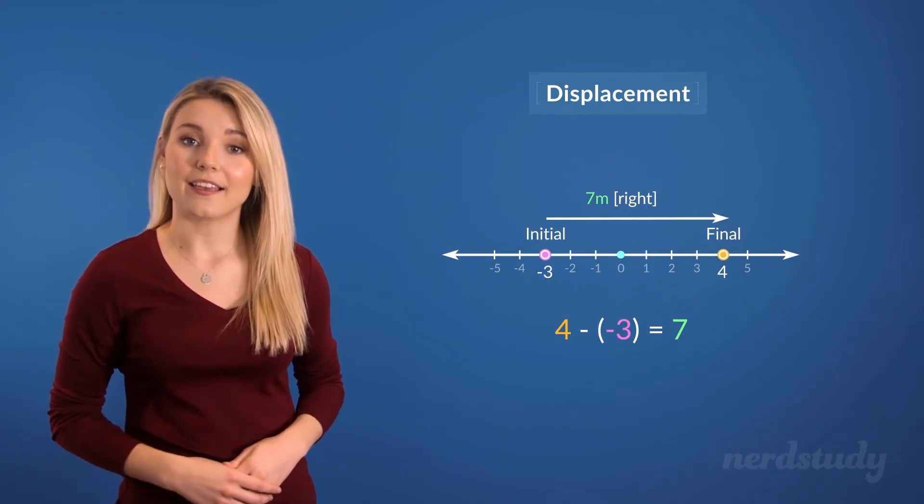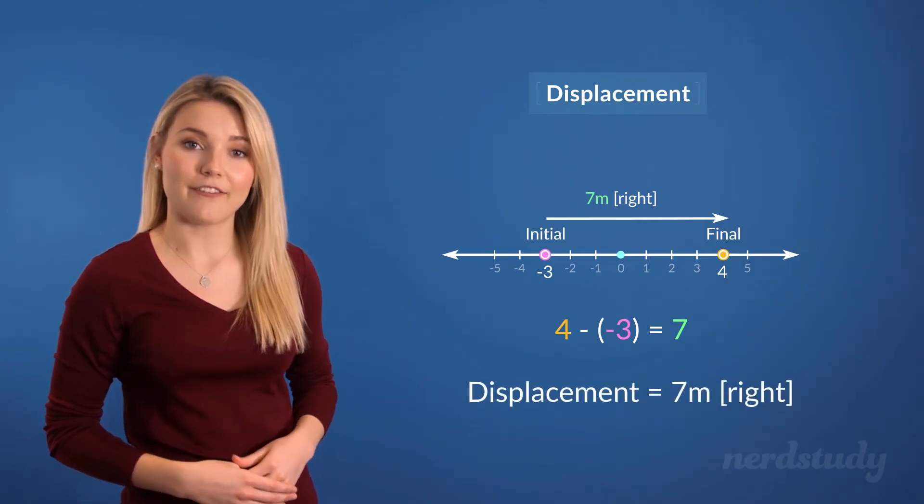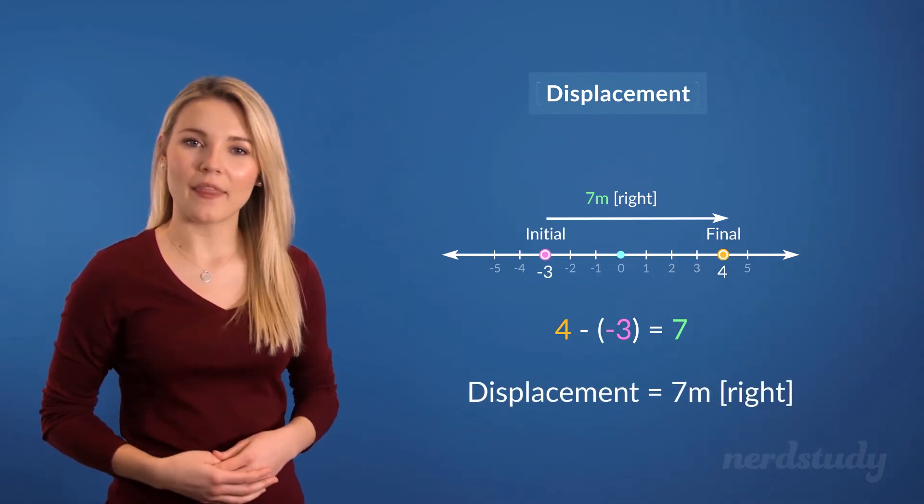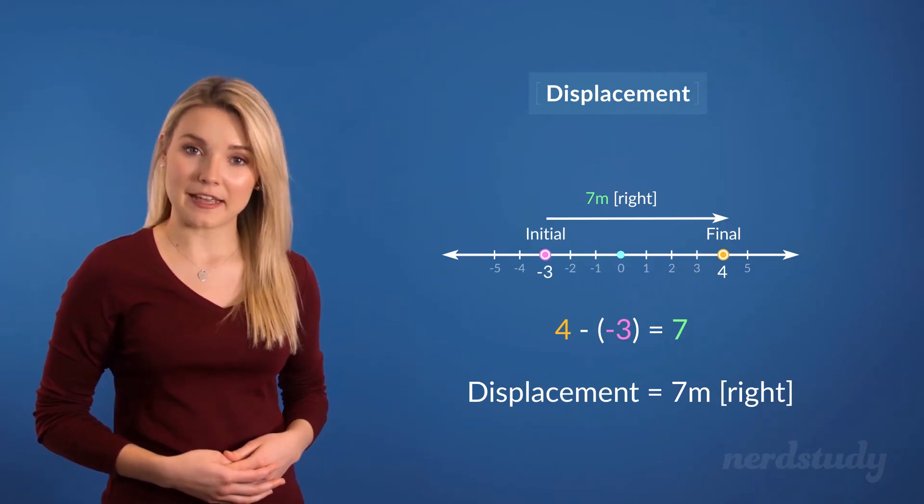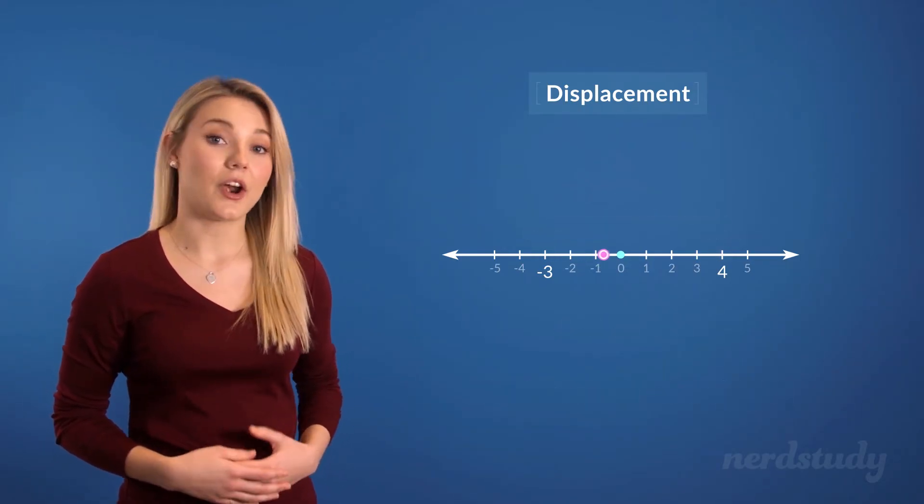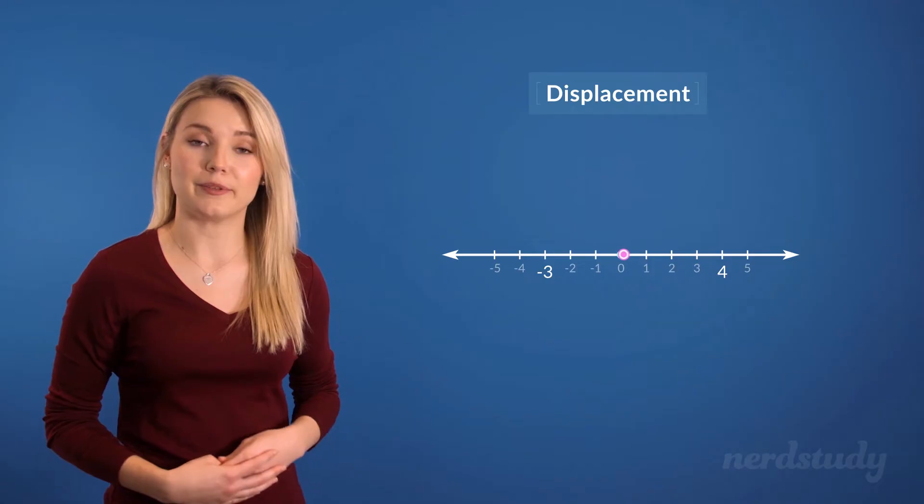So that gives us the displacement of 7 meters to the right. Now, one thing we need to remember about displacement is that it doesn't matter how the particle moves from one position to another.